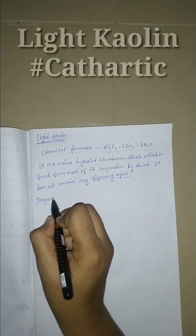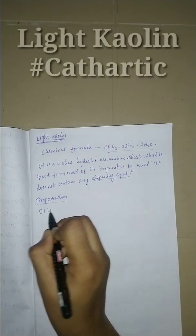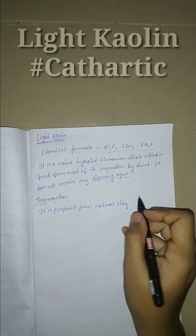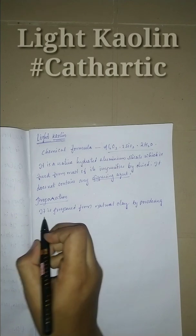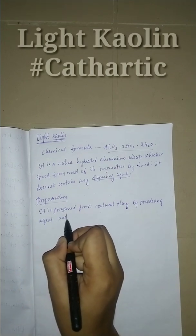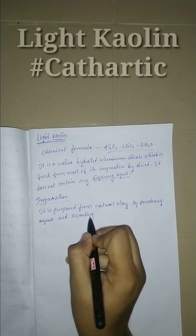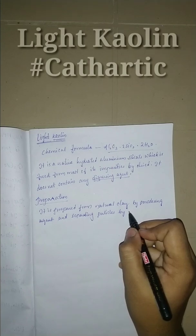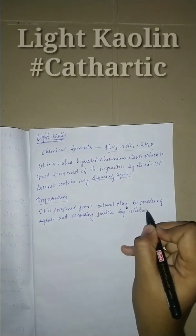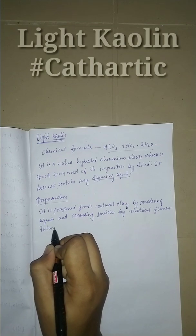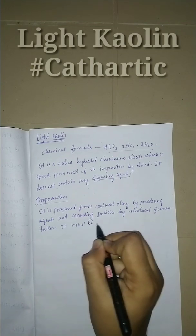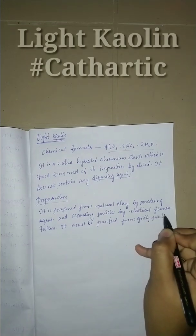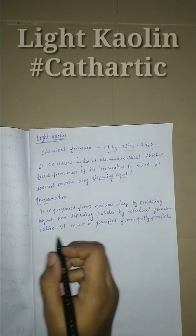Let us see the preparation of kaolin. It is prepared from natural clay by powdering method and separating particles by electrical fractionation. It must be purified from gritty particles and other impurities.